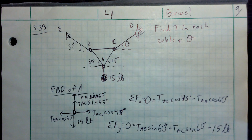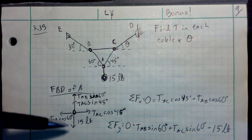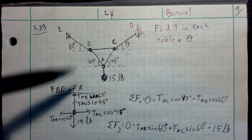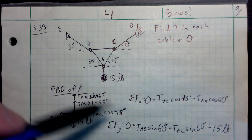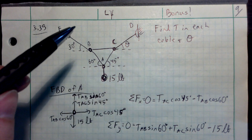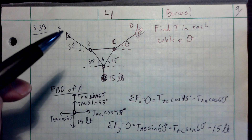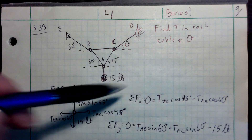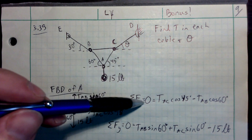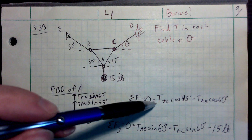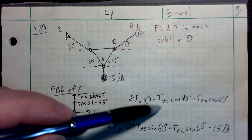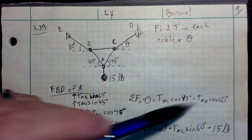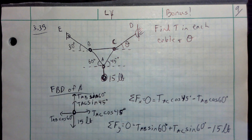When you draw a free body diagram correctly, it's really easy to write these equations. Now you can step back and say, I've got two equations and two unknowns — TAC and TAB. Two equations, two unknowns: I can solve.